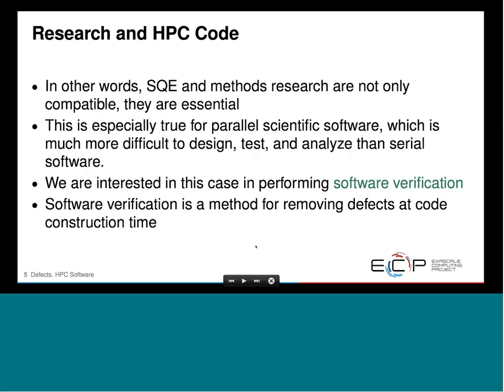This is always the kind of thing we end up fighting with. Quality engineering and methods research are not only compatible — they're really essential. Otherwise you end up in endless cycles trying to figure out whether you implemented something wrong or whether your theory and analysis are incorrect. This is especially true in parallel scientific software, which is much more difficult to design, test, and analyze than serial software.